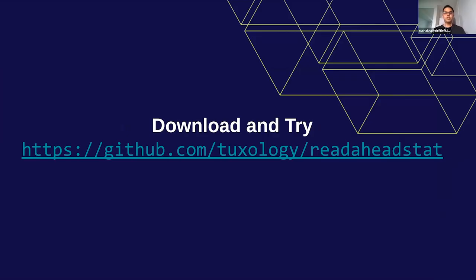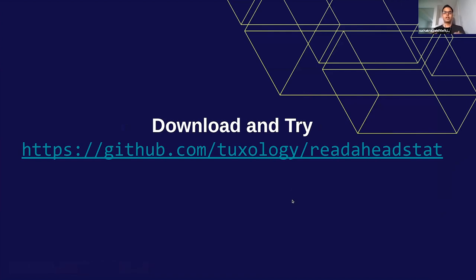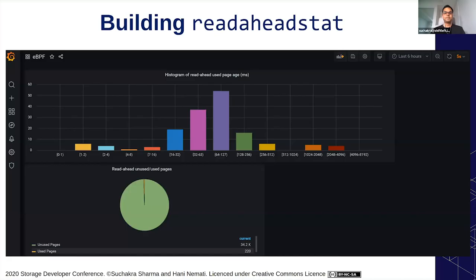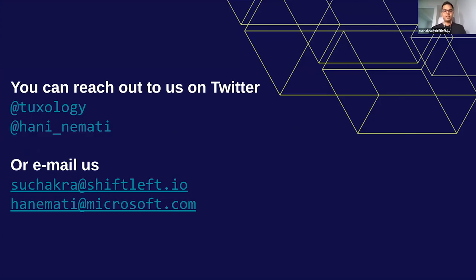You can download this simple tool — read-ahead stat — from the link provided. We hope you'll hack around with it and explore more ways to get information about your file system. This is just one example for read-ahead cache performance; there are many other avenues in the file system to optimize reads and writes. Thanks a lot — we hope you all enjoyed it and we'll be here for questions. You can also ask questions on Twitter or email us. Have a good day wherever you are.